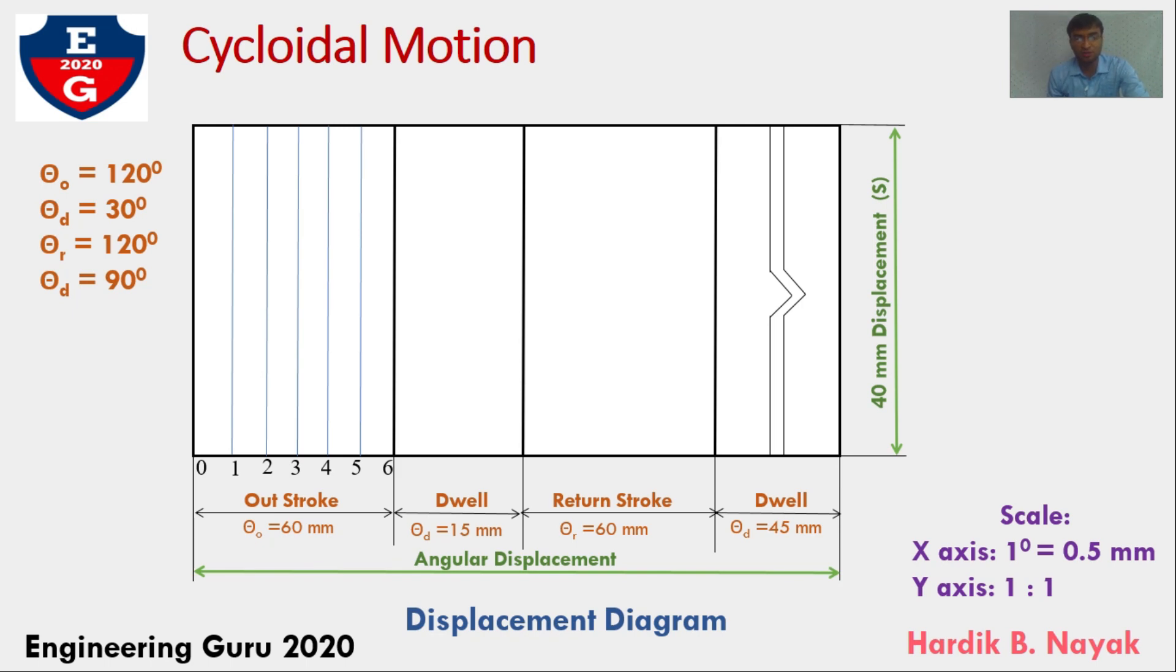I am taking this 30 degree. No need to divide because during dwell, follower neither move upward nor downward. After dwell, there would be return stroke that is 120 degree. Again, divide this return stroke into 6 equal parts and draw projected vertical line through all points. I would be keeping the same notation in reverse order that is 6, 5, 4, 3, 2, 1 and 0. After return stroke, the angle turned by cam is 120 degree. So, during the return stroke, follower would be reached its original position.